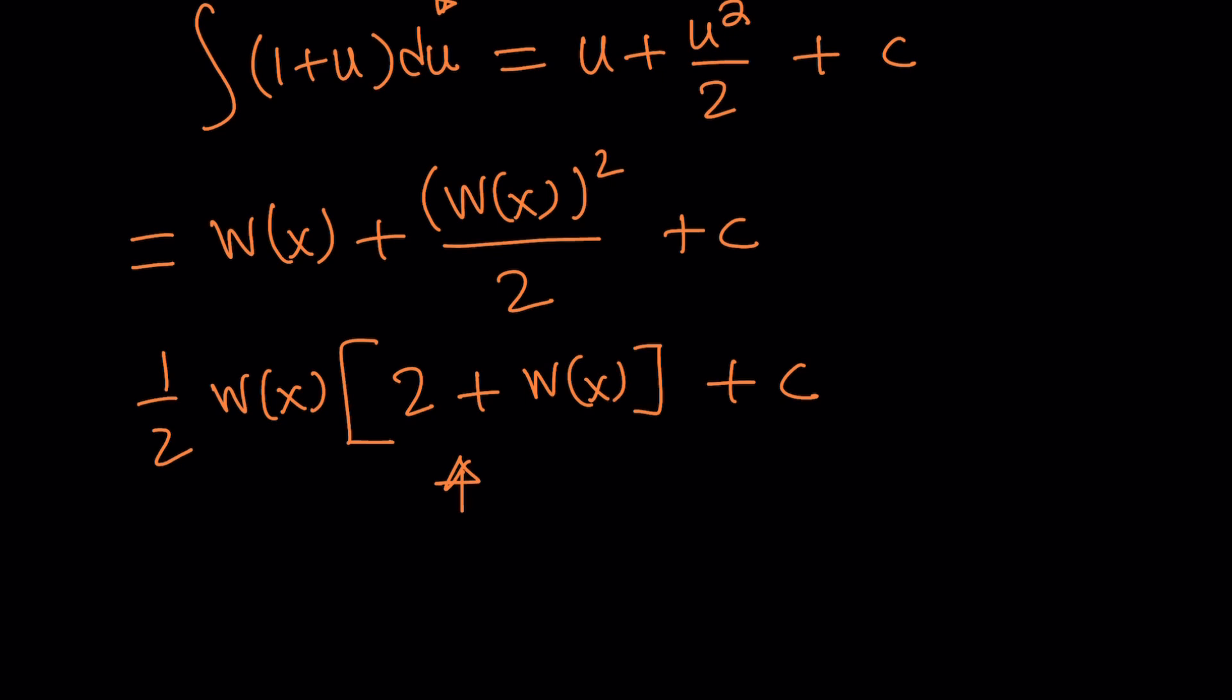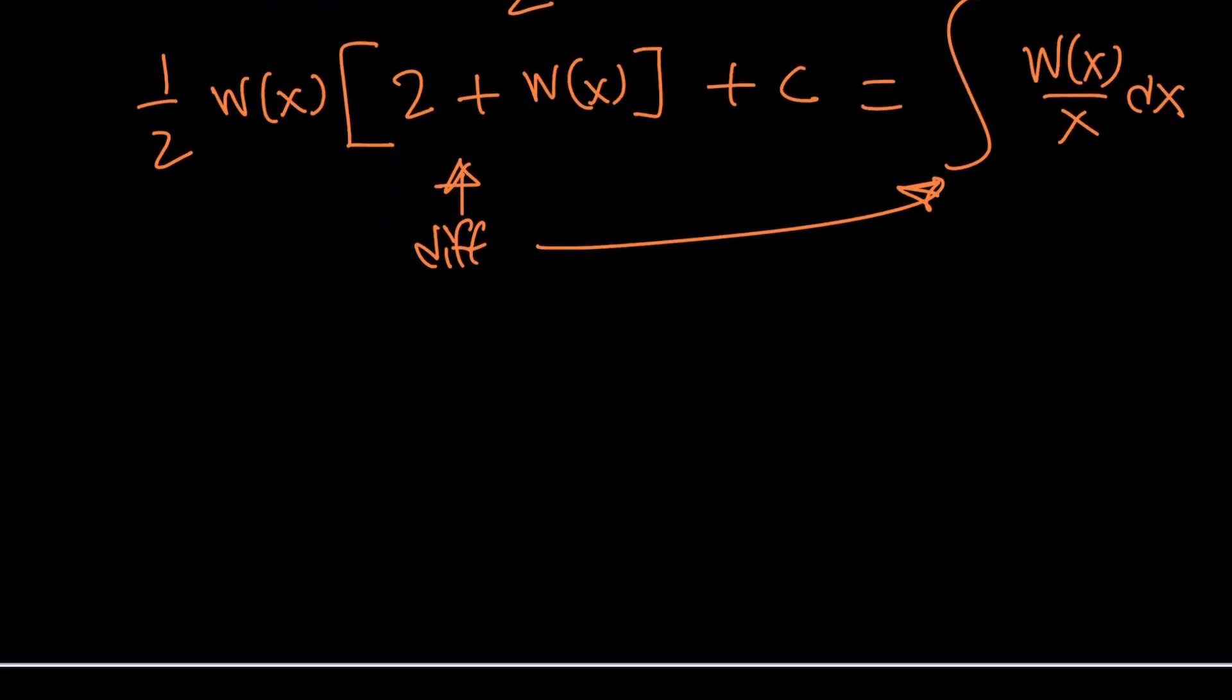So, basically, since this is the integral of W of x divided by x dx, when we differentiate this, it should give us that, right? The integrand, the stuff inside the integral sign. Does that really work? Well, it should. But, first of all, we need to talk about something which is important.